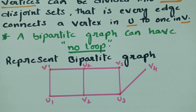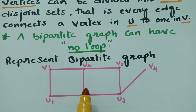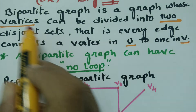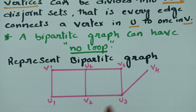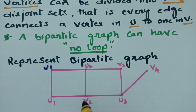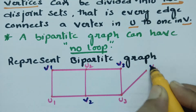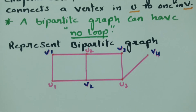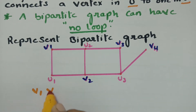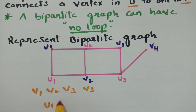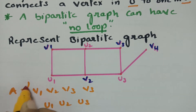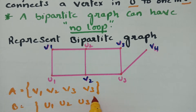Let's represent a bipartite graph. Looking at this graph, we have to separate the vertices into two disjoint sets. The vertices here are v1, v2, v3, v4, u1, u2, and u3. I'm going to separate these into the V set and the U set.